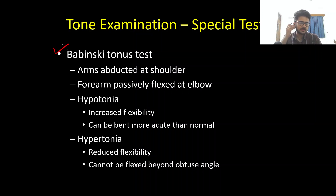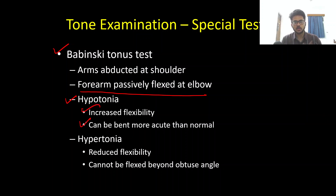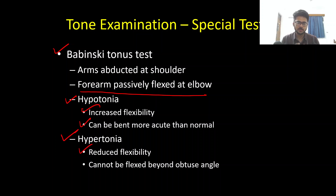One special test is the Babinski tonus test. We abduct the arms at the shoulder and then passively flex the forearm at the elbow. If the patient is having decreased tone — hypotonia — we will be able to easily flex the elbow at a much more acute angle than normal. However, if the patient is having hypertonia, this passive flexion of the forearm at the elbow will be limited and cannot be flexed beyond an obtuse angle.